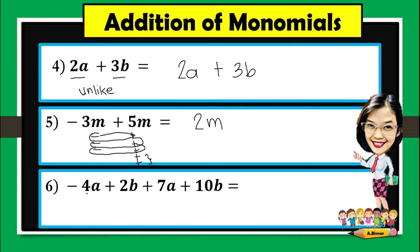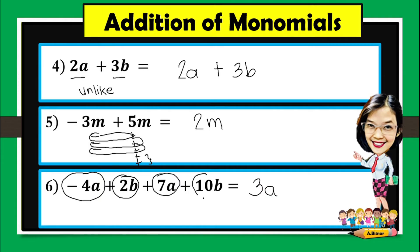Number 6, negative 4a plus 2b plus 7a plus 10b. Again, combine similar terms or like terms. So we have negative 4a and 7a. For negative 4 and positive 7, this will give you positive 3a. Then let's add 2b and 10b. This results to 12b. And so the final answer is 3a plus 12b.